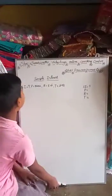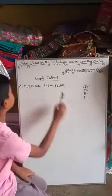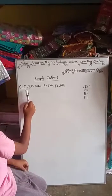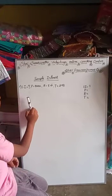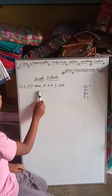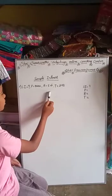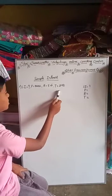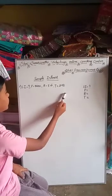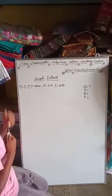Today's topic is Simple Interest. SI is equal to unknown. Principal is equal to 9000. Rate is equal to 5%. Time is equal to 292 days.